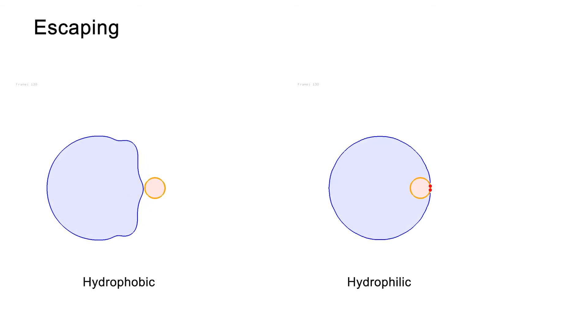A rigid ball originally trapped in a water drop can either escape or continue being trapped depending on its surface property.